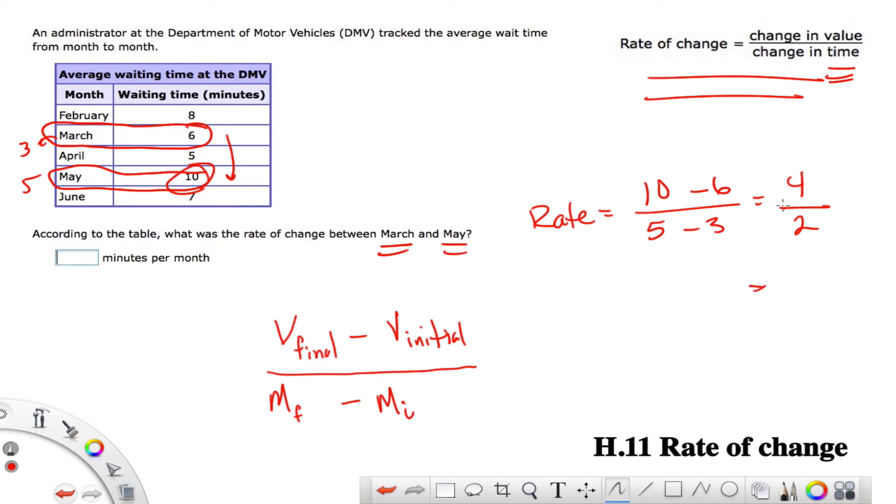This then can reduce to 4 over 2 is simply 2. So in this case, the rate of change was 2 minutes per month. And this is a positive number. It's gone up 2 minutes per month. So that is another example of a rate of change.